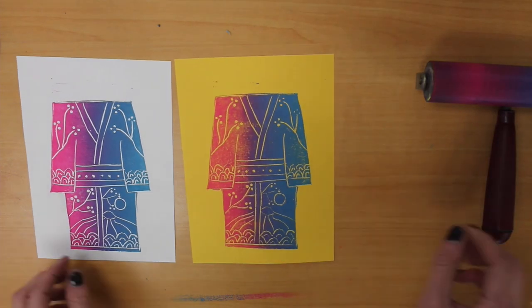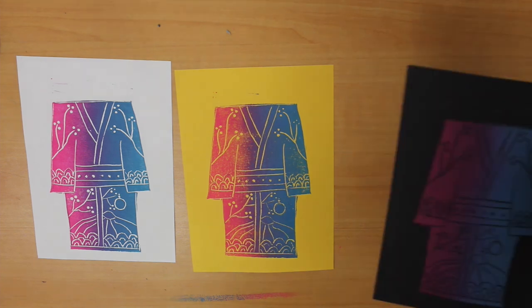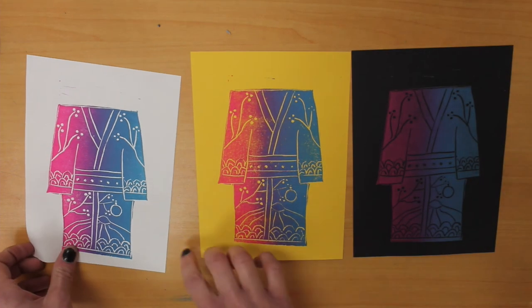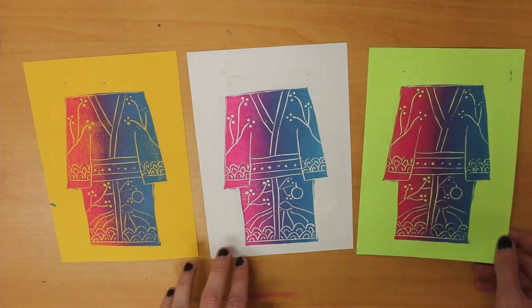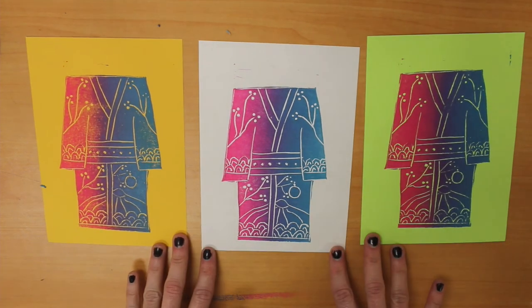All right, friends, here we go. So I'm going to take a look at mine. Let's see, which colors do I like? I'm going to keep going. Ah, there we go. I think I like that. The yellow, the white, and the green. Fabulous. I can't wait to see what your Japanese kimonos look like.